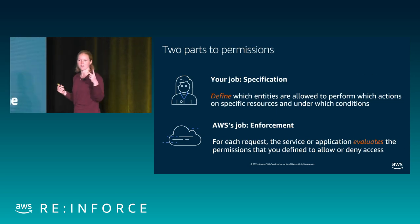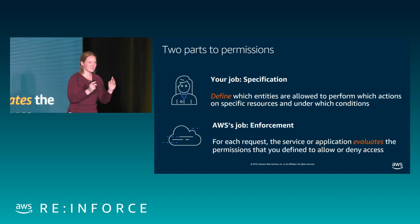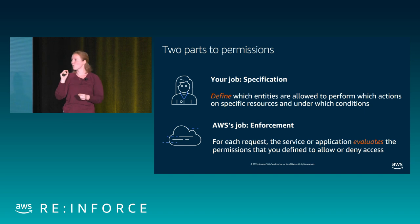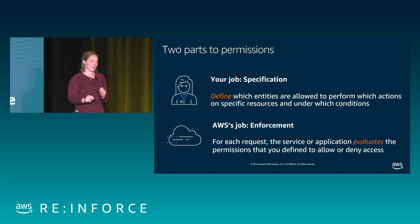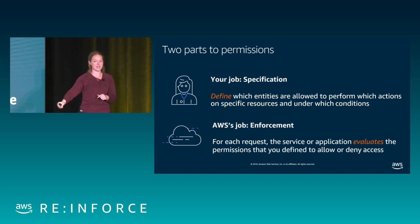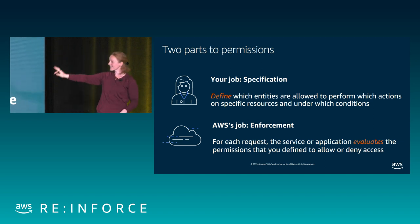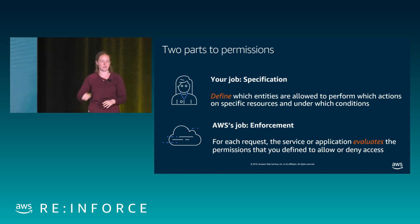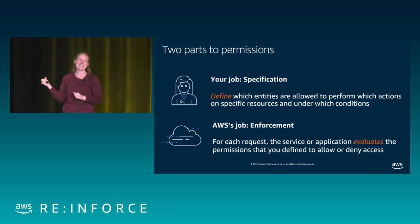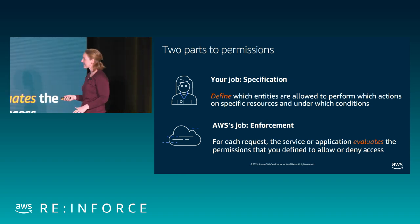When you talk about that permissions box, there are two parts. First is your job: you define which entities are allowed to perform which actions on specific resources under specific conditions. Fun fact: there are over 4,000 actions in AWS — we get granular. The next part is AWS's job: for every request that comes in, AWS evaluates based on the policies you set and either allows or denies access. There's no middle ground — it's either a yes or no.